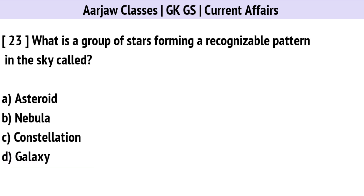What is a group of stars forming a recognizable pattern in the sky called? The right option is C: Constellation.